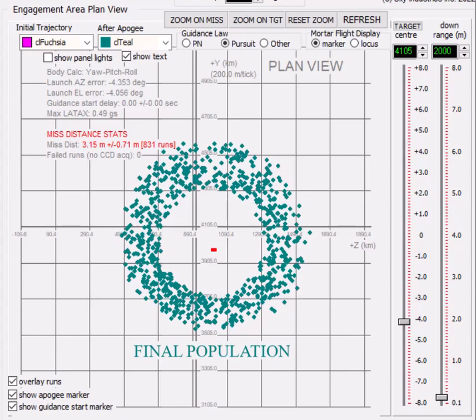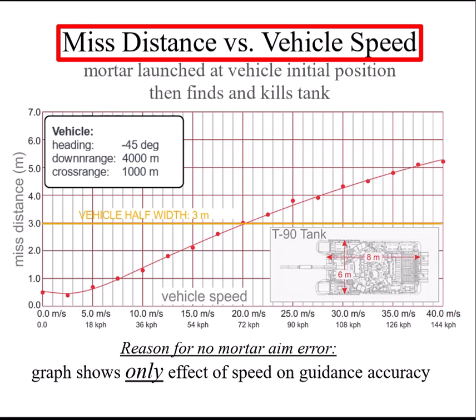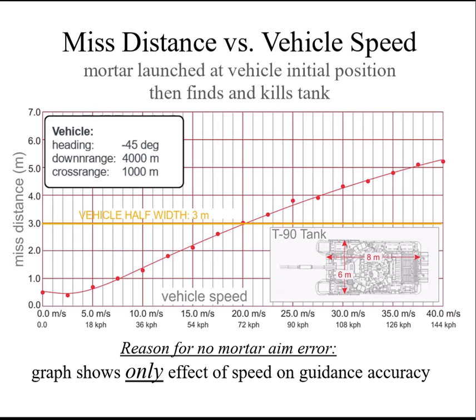The final population looks like this. It makes a ring. A graph of single run missed distance versus target speed looks like this, where there's no aiming error from the mortar and if the round can pull half a G.